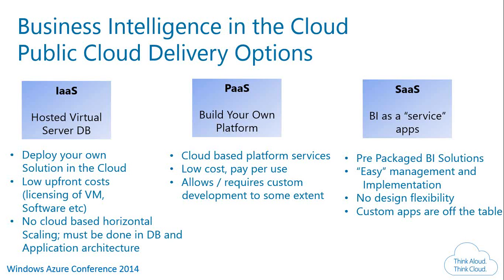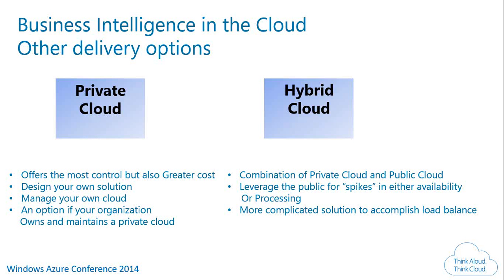Regarding the other two variants — private cloud and hybrid cloud: private cloud means your organization owns and operates its own cloud, which is slightly more expensive. In hybrid cloud, your data sits on the private cloud, but during spikes such as quarter-end reporting, year-end reporting, or financial rushes, the public cloud handles the overflow. It's a combination of private and public cloud.